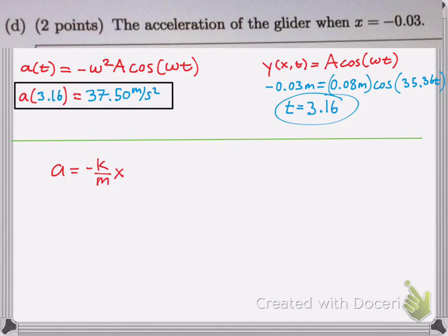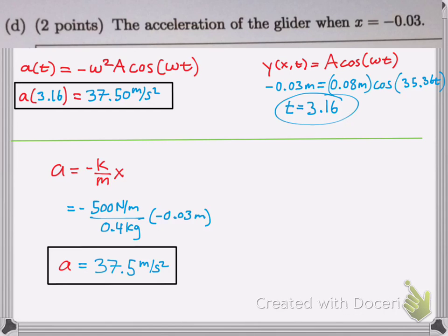Another way you can do this is the formula method. A equals negative k over m times x. Same thing. You plug in everything you know, and there's your answer.